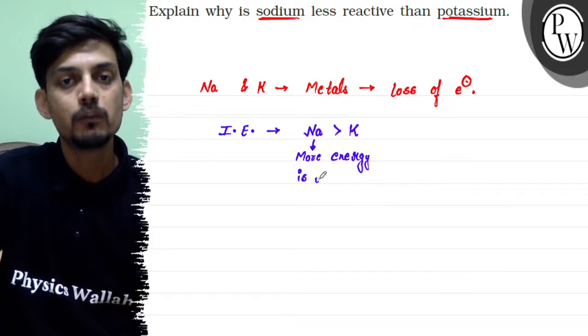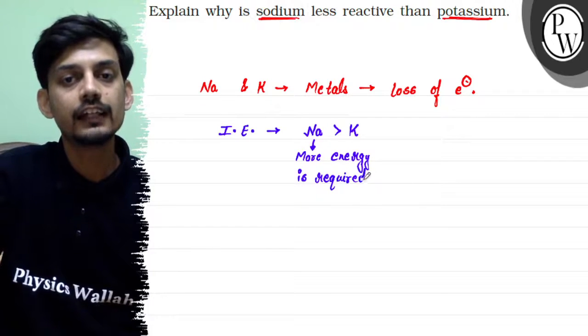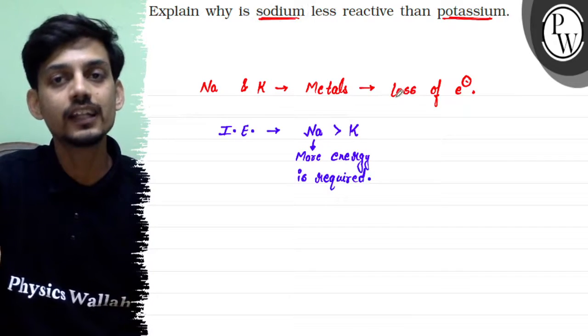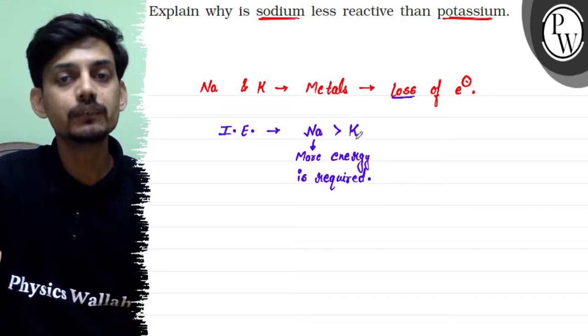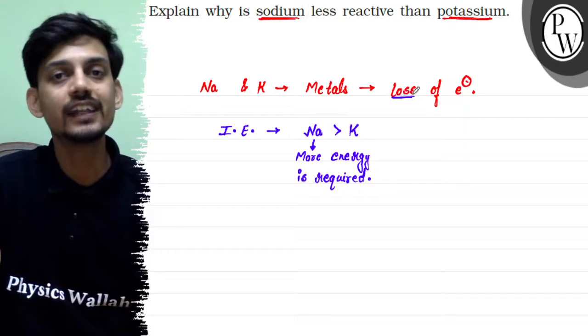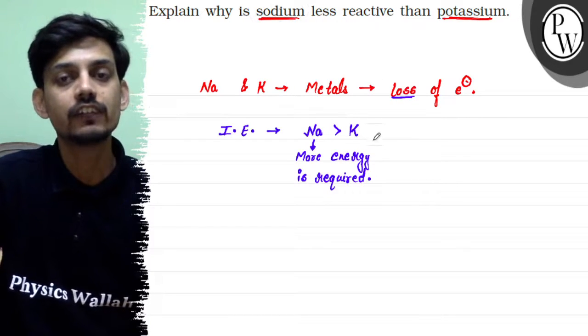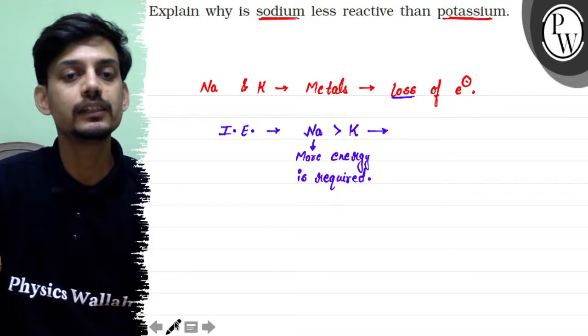So for sodium, more energy is required to remove the electron. And agar sodium se electron nikaalna zyada mushkil hoga, to potassium ki electron loss karne ki tendency ya reactivity zyada hogi.